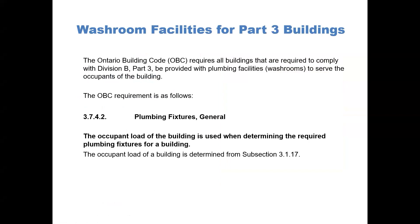The OBC requirement is as follows. Article 3742 states that the occupant load of the building is used when determining the required plumbing fixtures for a building. The occupant load of a building is determined from subsection 3.1.17.